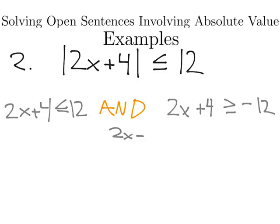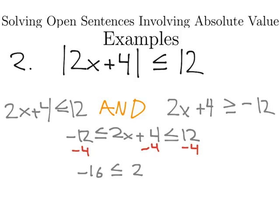We could also write this as 2x plus 4 is less than or equal to 12, and it's also greater than or equal to negative 12. We could combine it like that, because it is an AND statement. So now I'll subtract 4 from all sides, and I get that negative 16 less than or equal to 2x is less than or equal to 8.